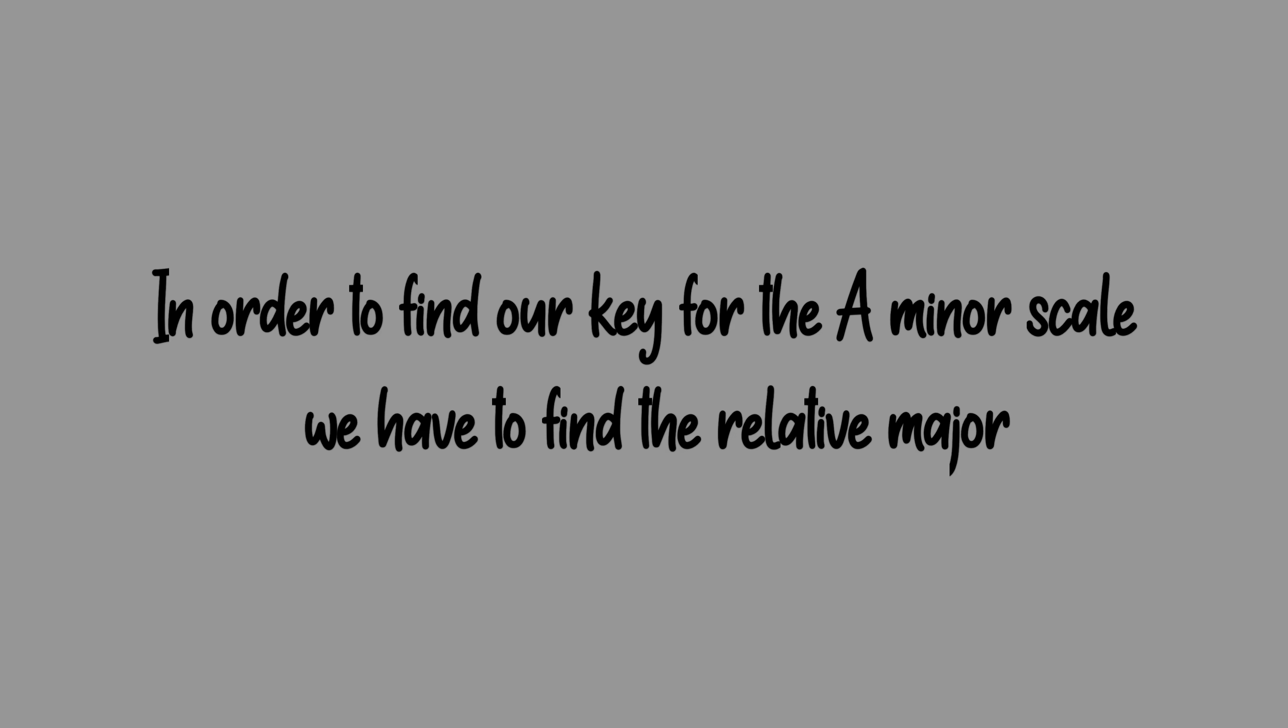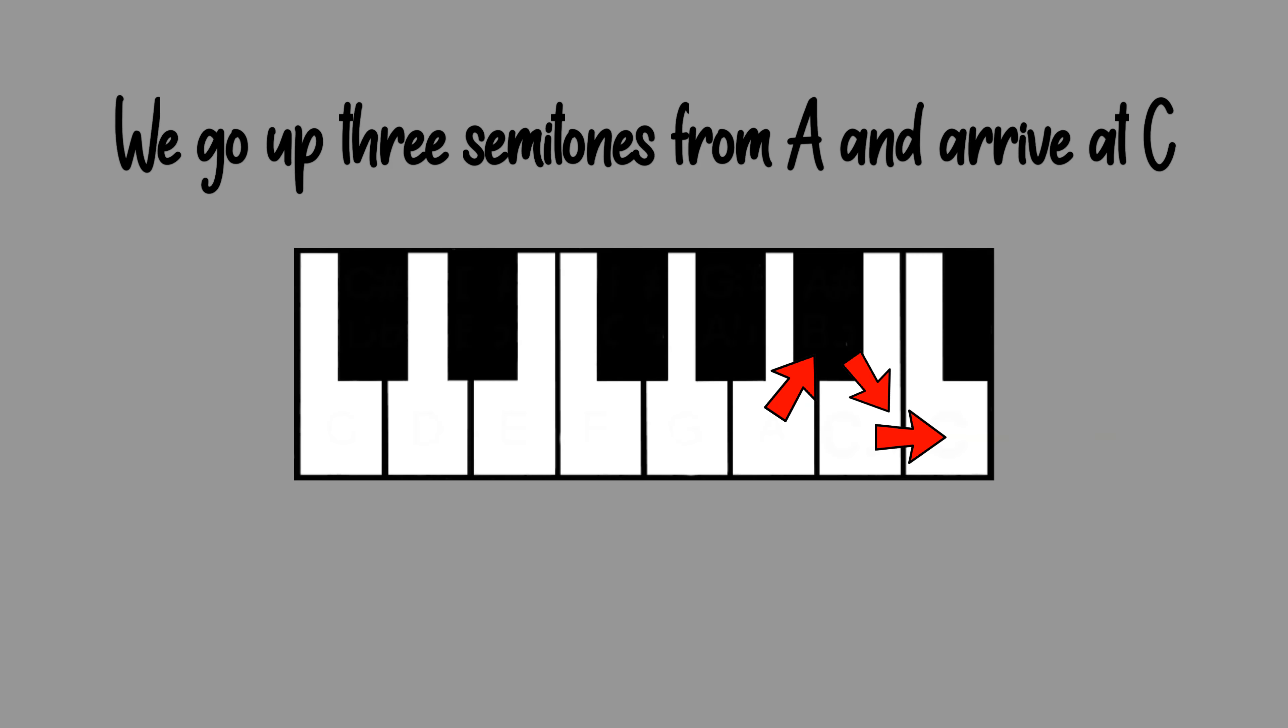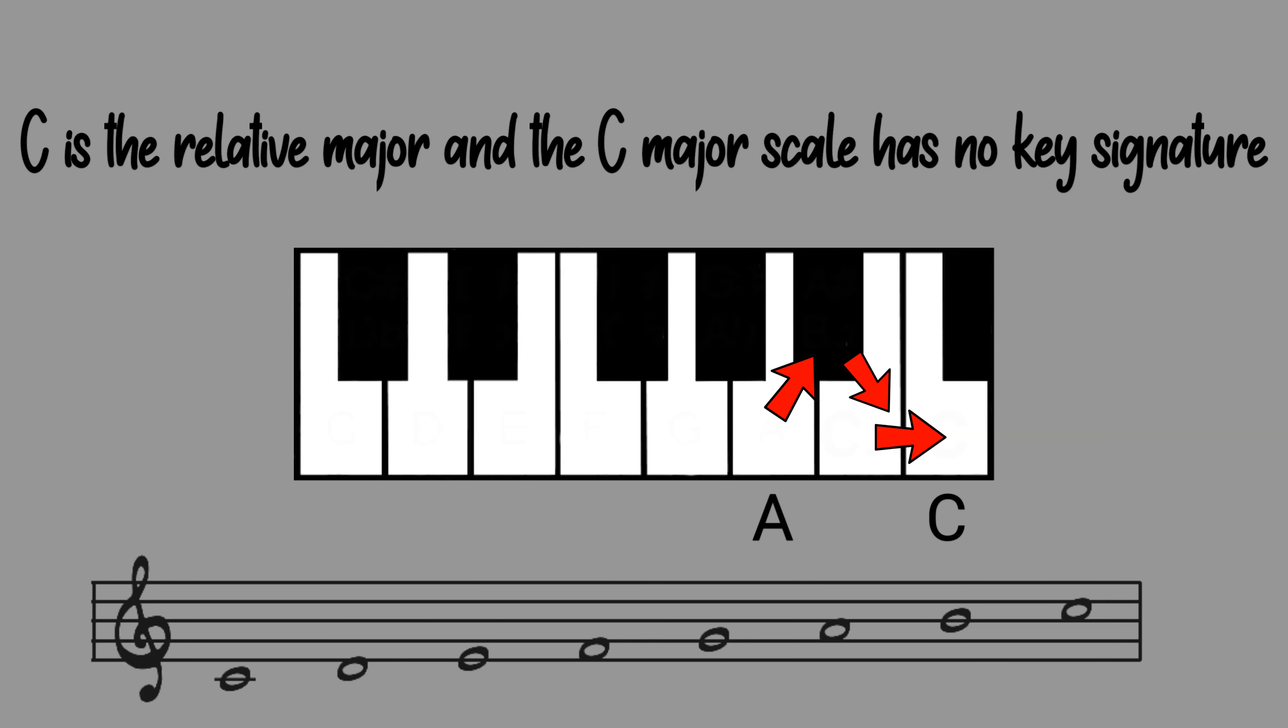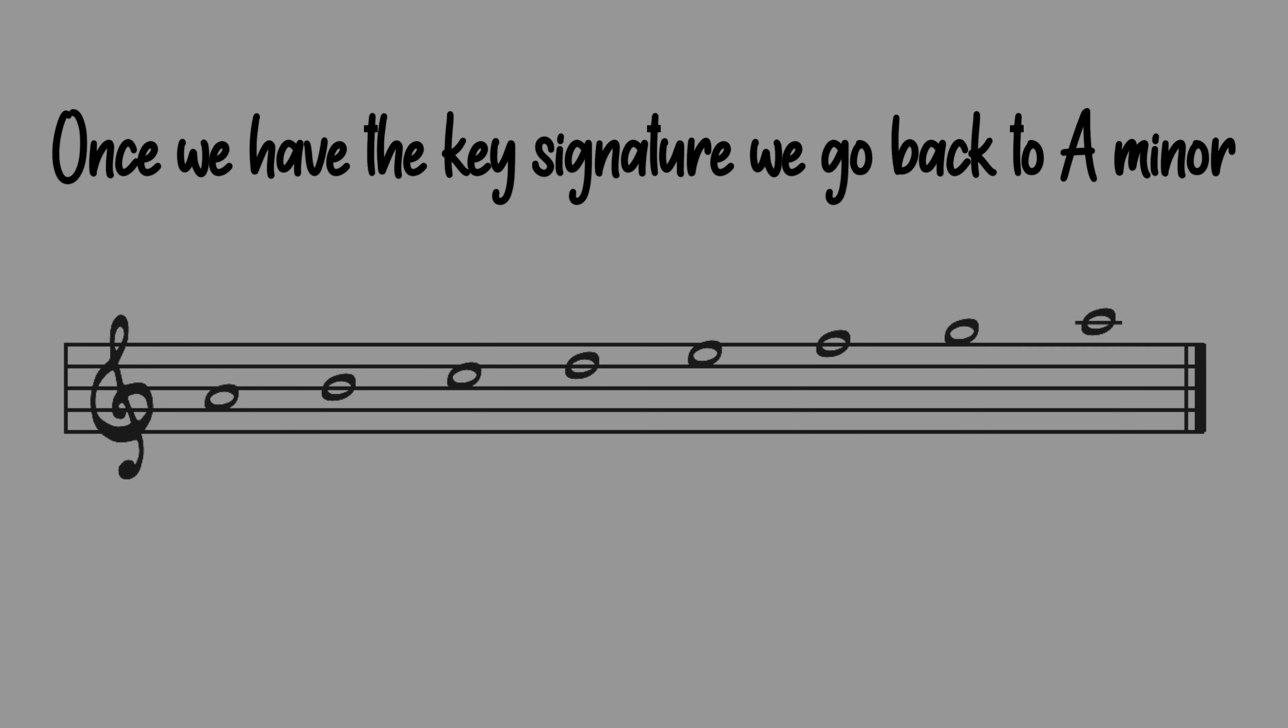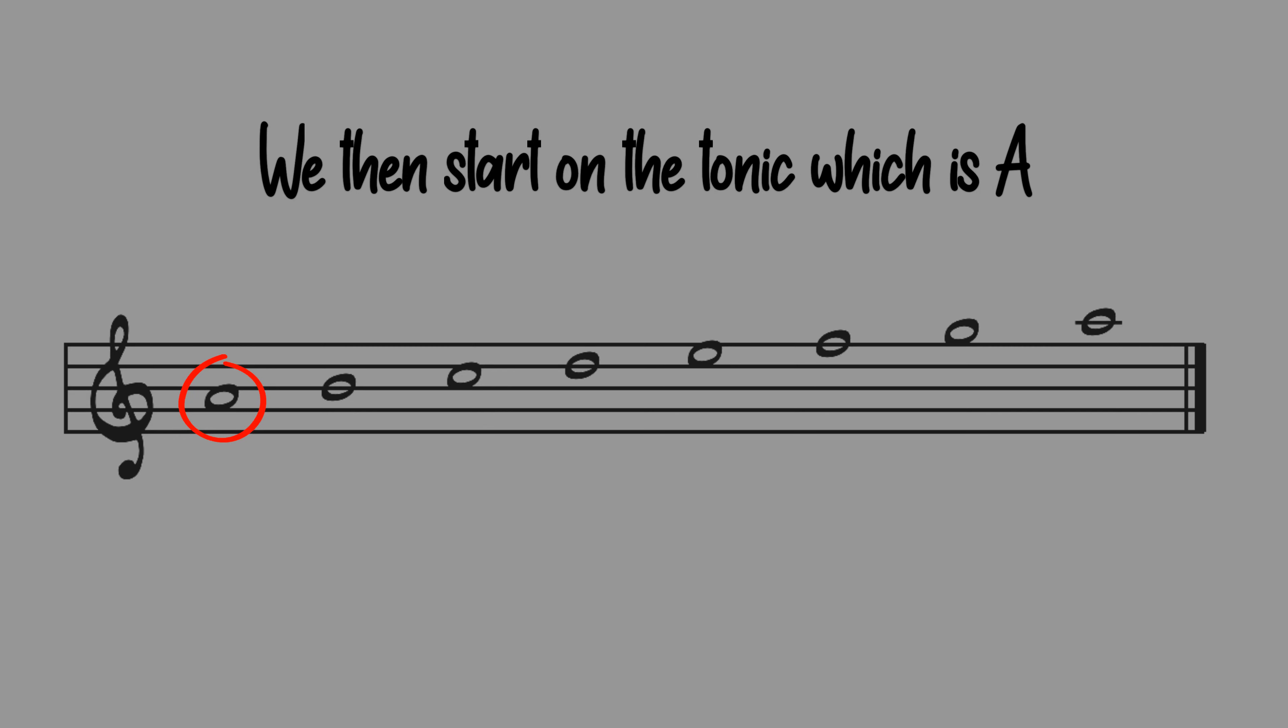Let's start in A minor. In order to find our key for the A minor scale we have to find the relative major. We go up three semitones from A and arrive at C. C is a relative major and the C major scale has no key signature. Once we have the key signature we go back to A minor. We then start on the tonic which is A.